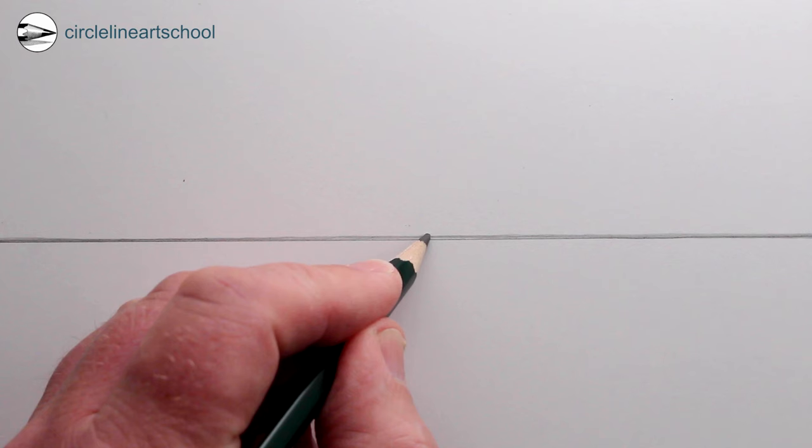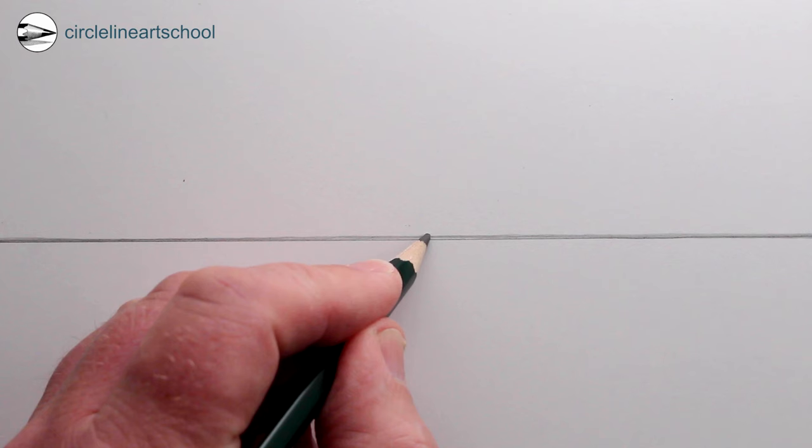start by drawing a horizontal line across your page and then a dot in the center of the horizontal line for the vanishing point, the point where all parallel receding lines will look like they go towards.